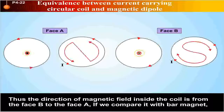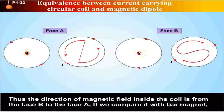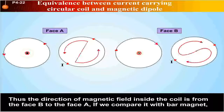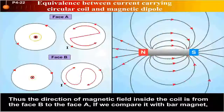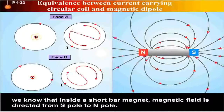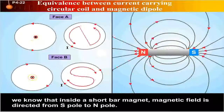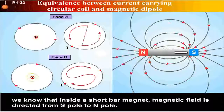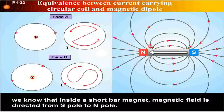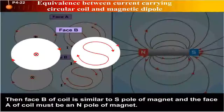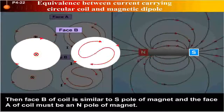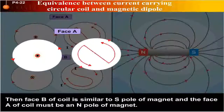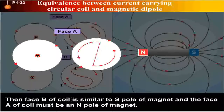Thus, the direction of magnetic field inside the coil is from face B to face A. If we compare it with a bar magnet, we know that inside a short bar magnet, the magnetic field is directed from the S-pole to the N-pole. Then, face B of the coil is similar to the S-pole of the magnet and face A of the coil must be the N-pole of the magnet.